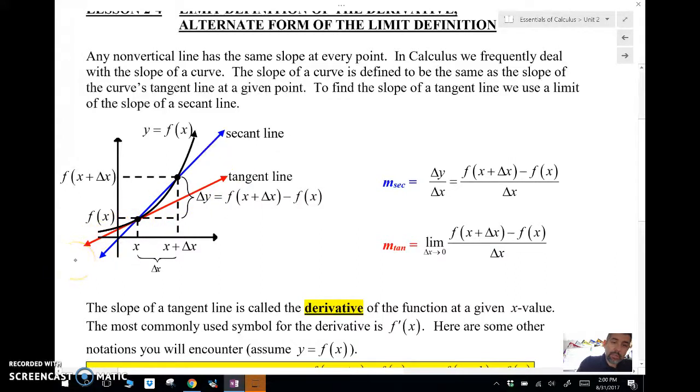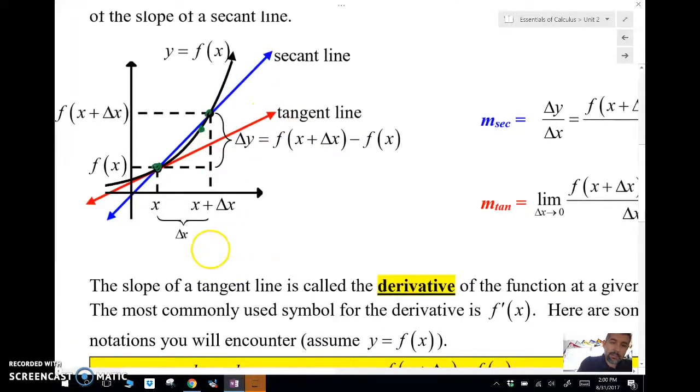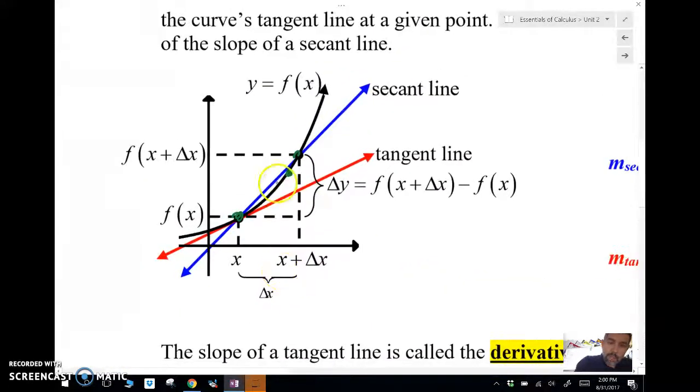What we're going to do is we're going to take the slope of what's called the secant line. The secant line is between any two points. And what we're going to do is we're going to make points closer and closer. And closer. And we're just going to keep making secant lines closer and closer and closer.